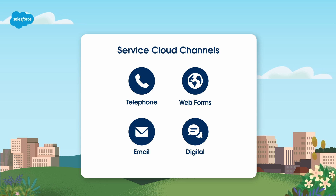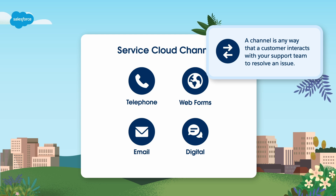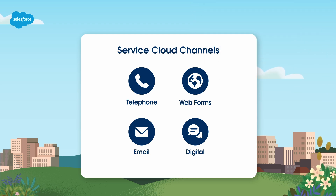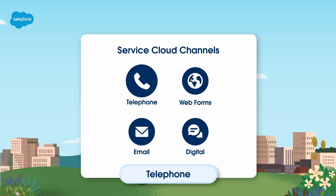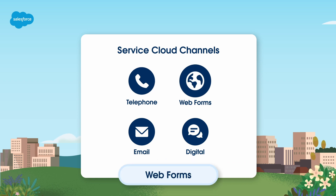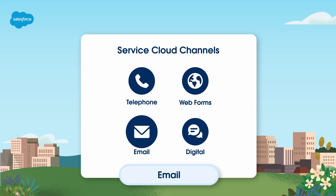A channel is any way that a customer interacts with your support team to resolve an issue. Your customers can reach you on many channels. By telephone, your customer can call your business and be routed directly into Service Cloud — if you have high volume you're likely already using Service Cloud Voice or Open CTI, or if your call volume is low your agents may be taking calls and manually entering details. With web forms, customers can submit support requests from your website with a simple customizable form, and Web-to-Case will automatically turn these inquiries into cases. By email, customers can request support and Email-to-Case will turn those inquiries into cases.